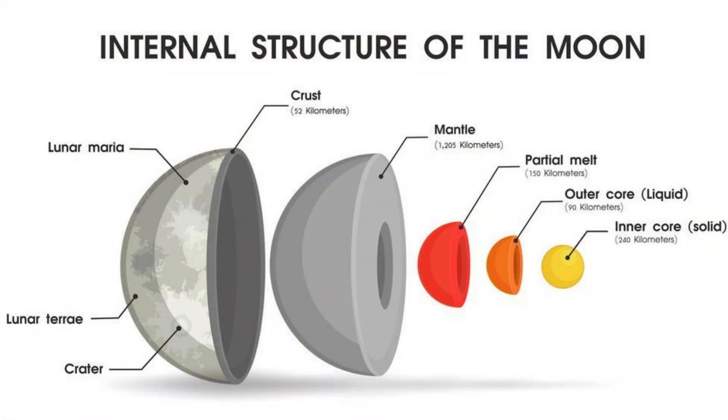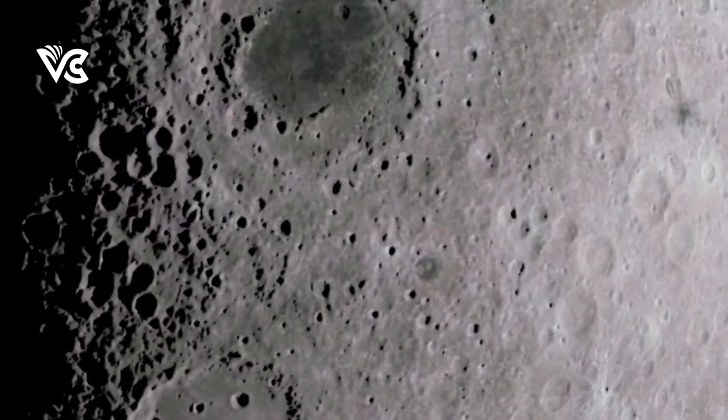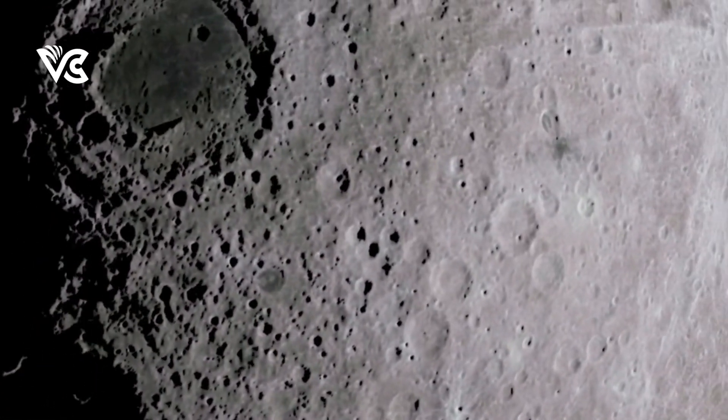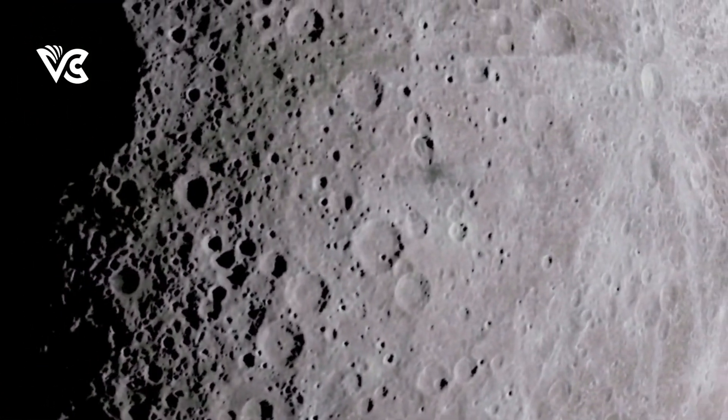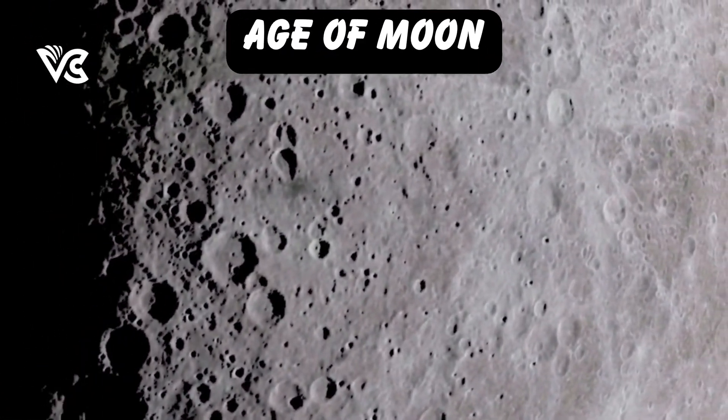By knowing the total depth of the solid crust of the lunar surface and the rate of solidification of the crust, we can calculate when the Moon formed.